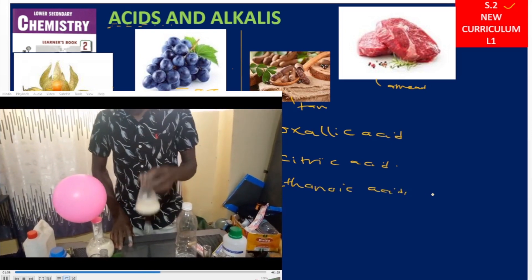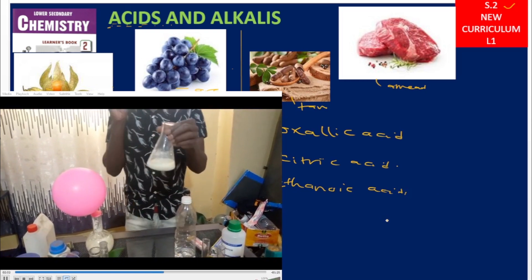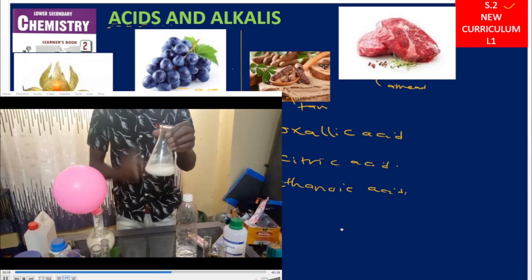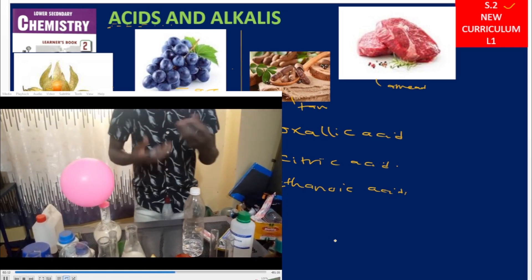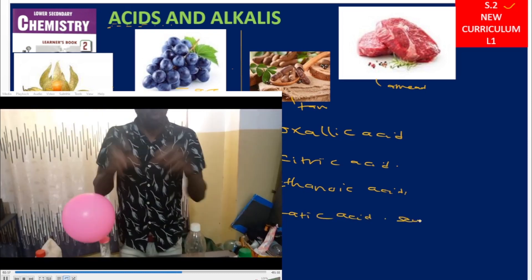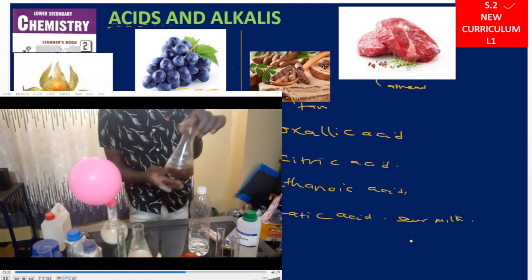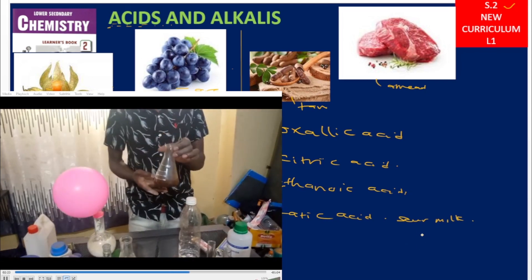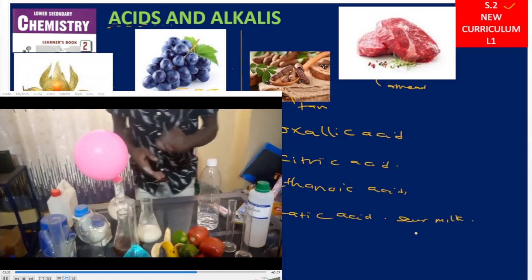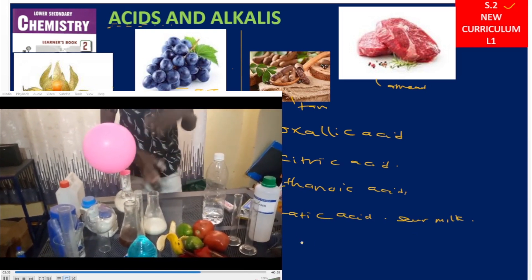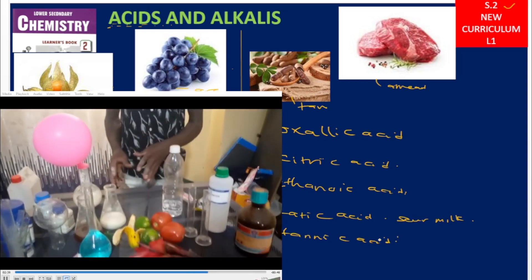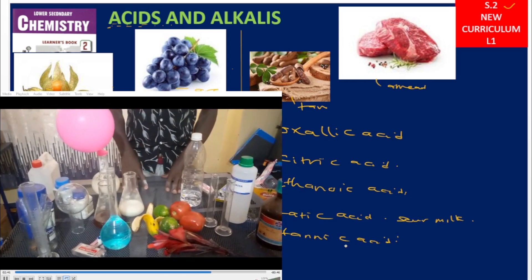That is laboratory-prepared sour milk, made sour by bacteria called lactobacillus. The acid found in sour milk is called lactic acid. Over there is tea — when you put tea leaves in hot water or hot milk, the resulting drink also contains an acid, and that acid is called tannic acid. These are organic acids found within our localities.